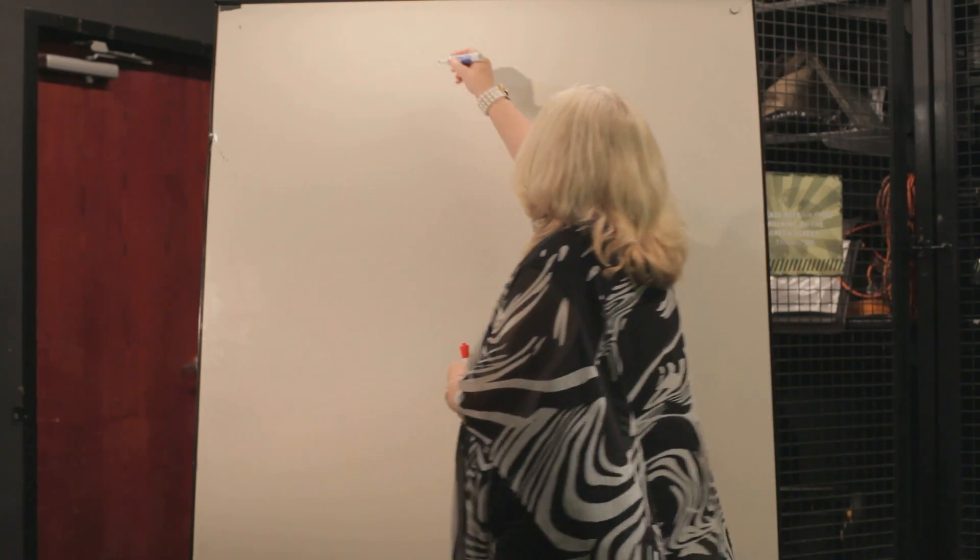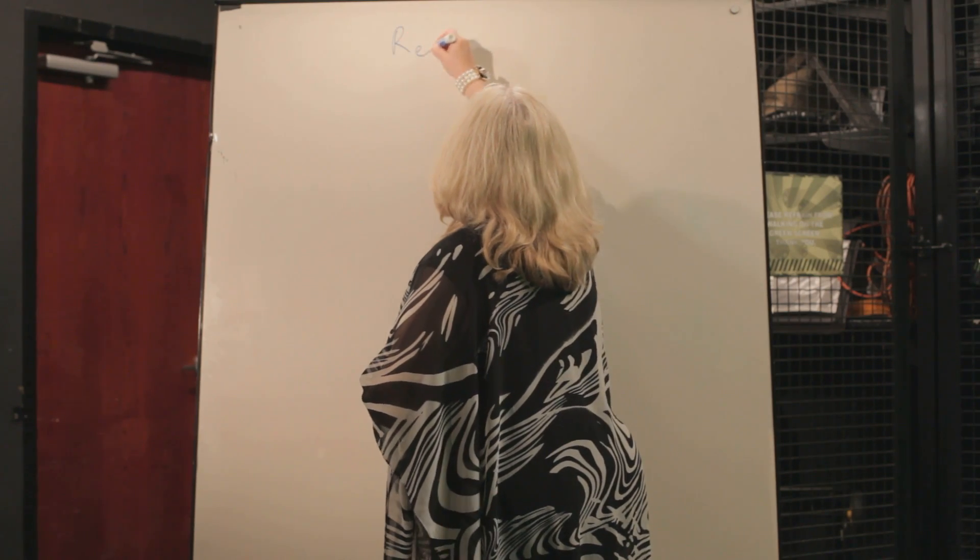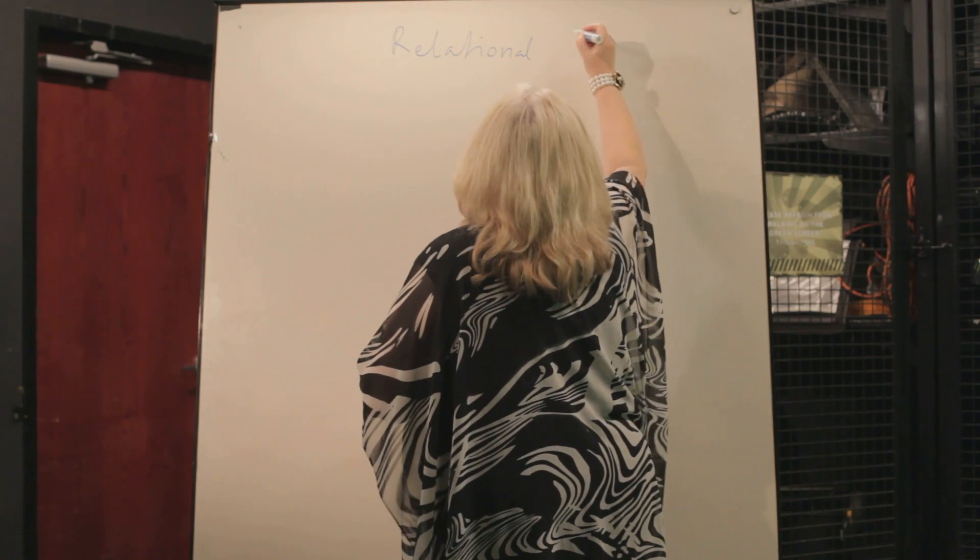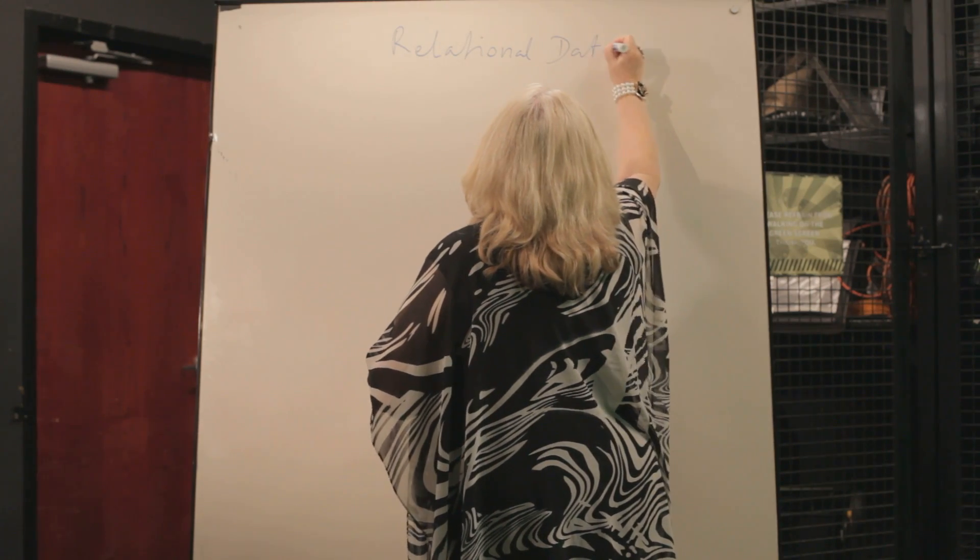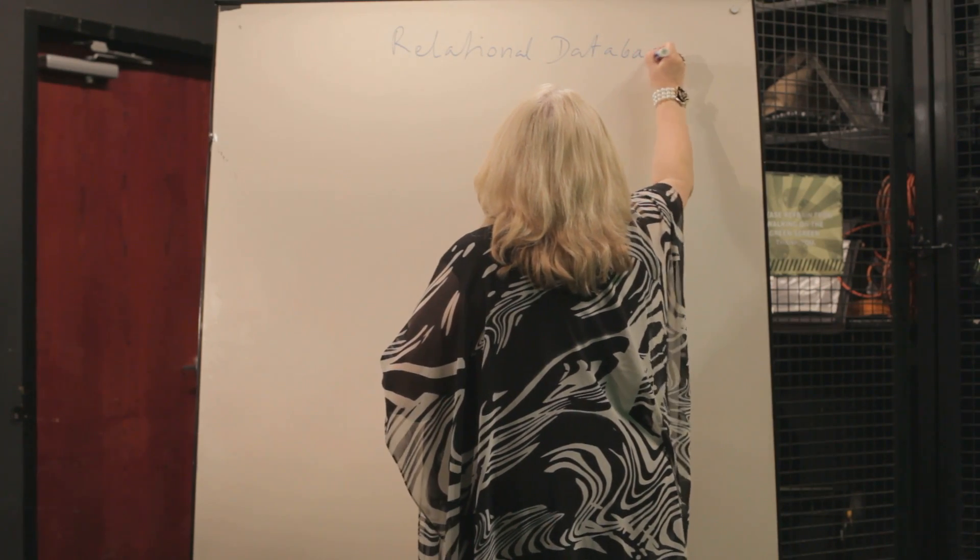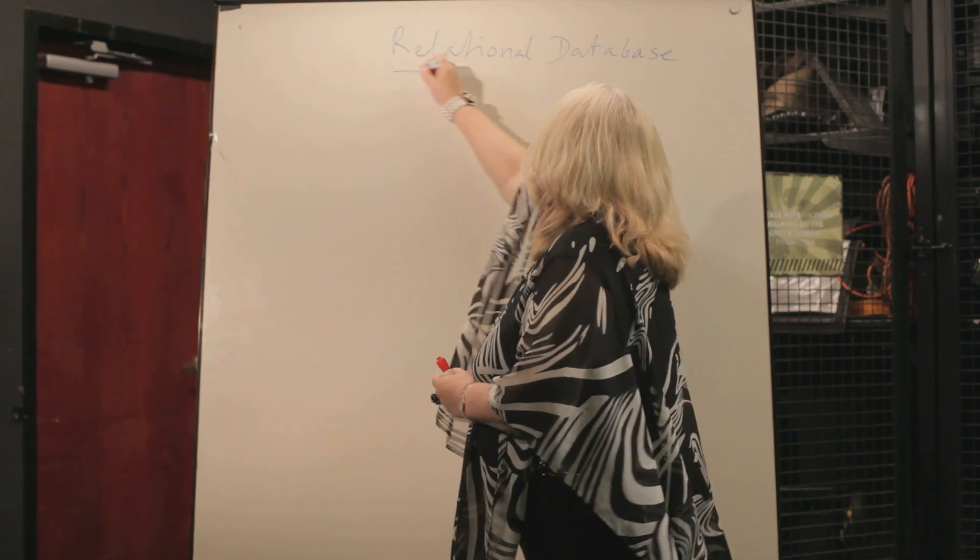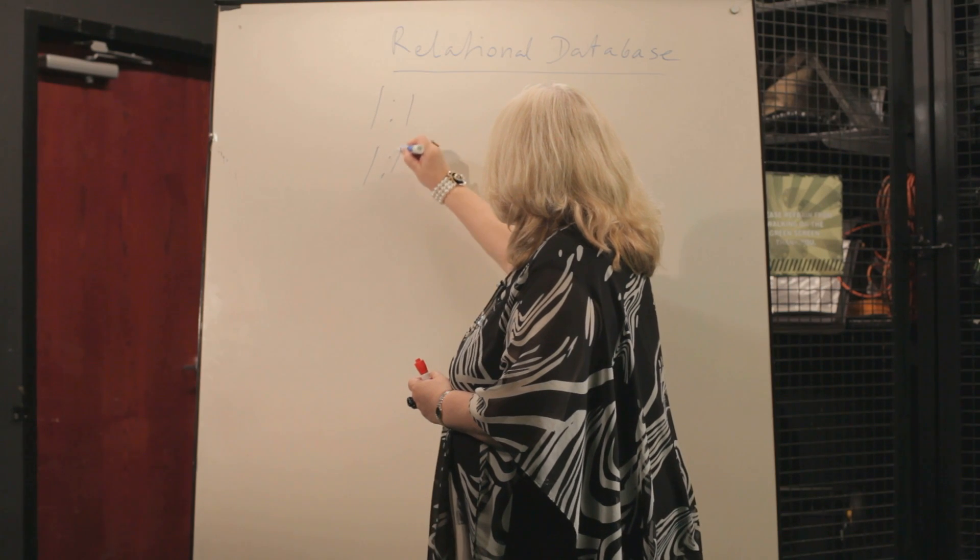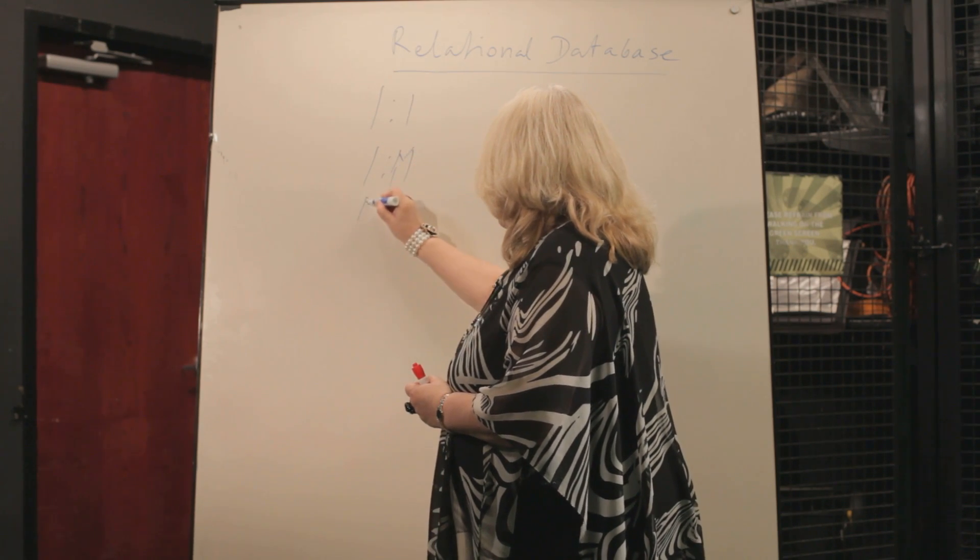So we are talking about relational database. It's relational because there are relations in the databases. Relational database has three relations only: one-to-one, one-to-many, and many-to-many.